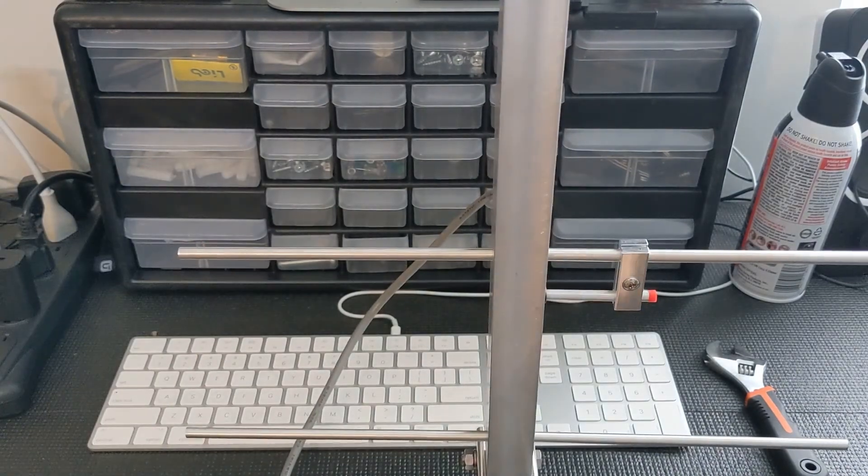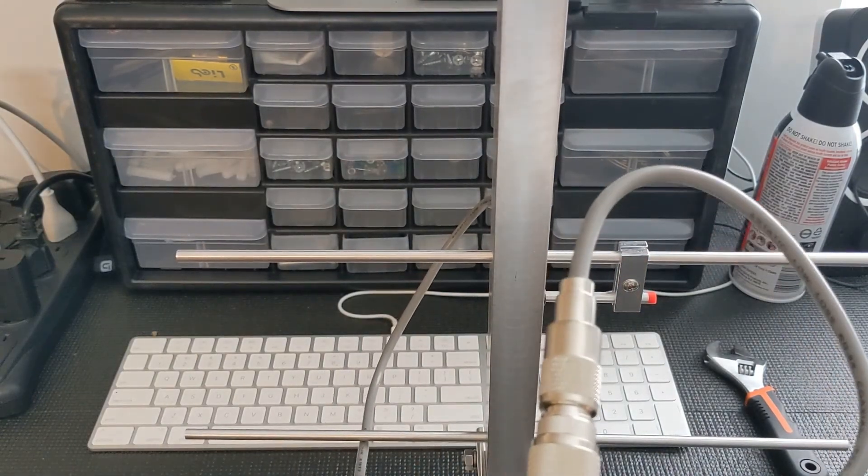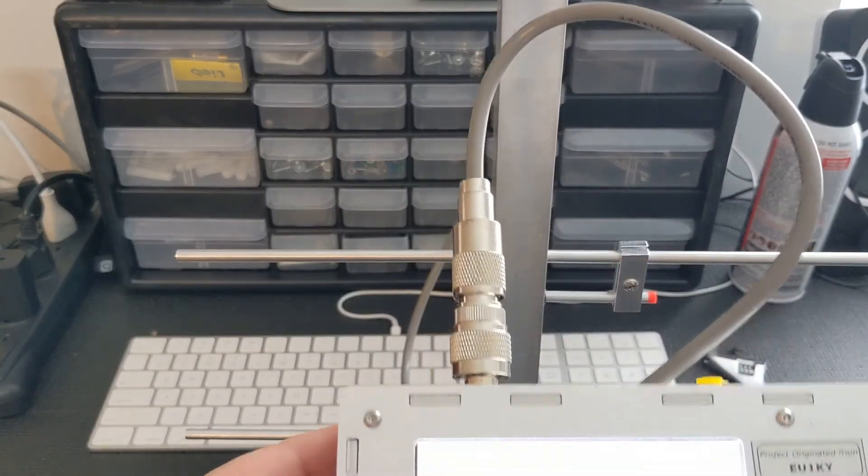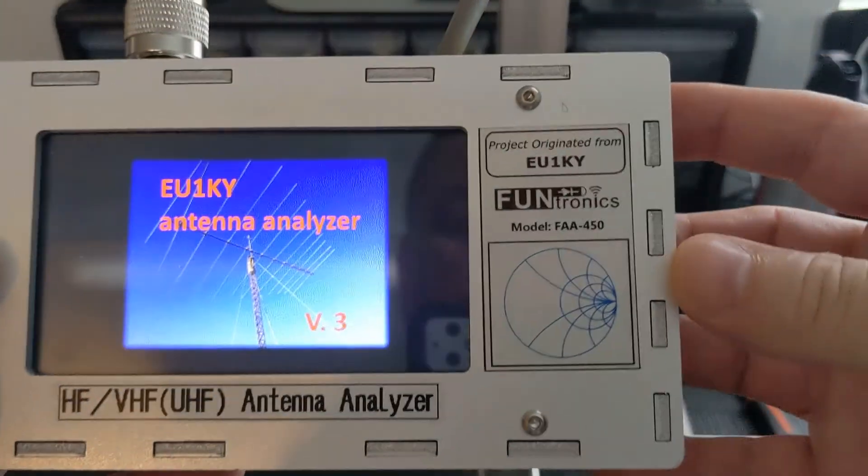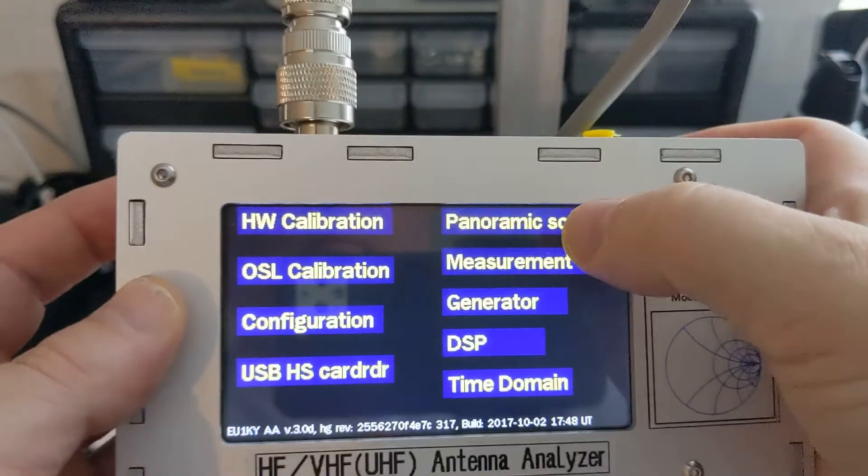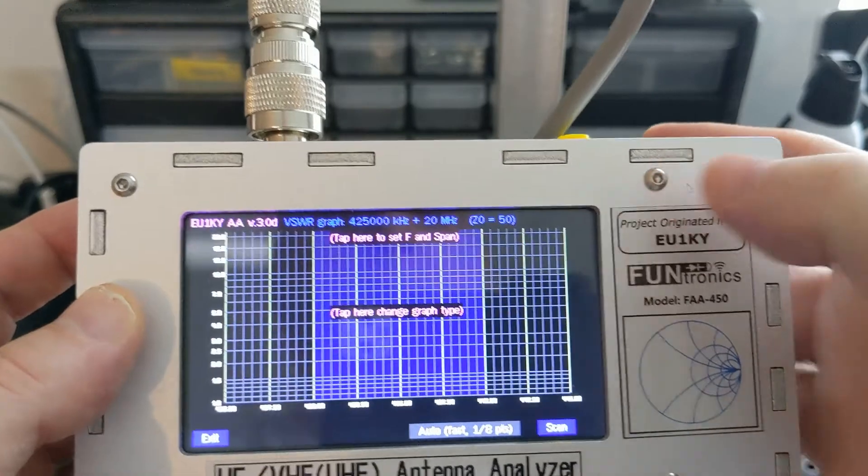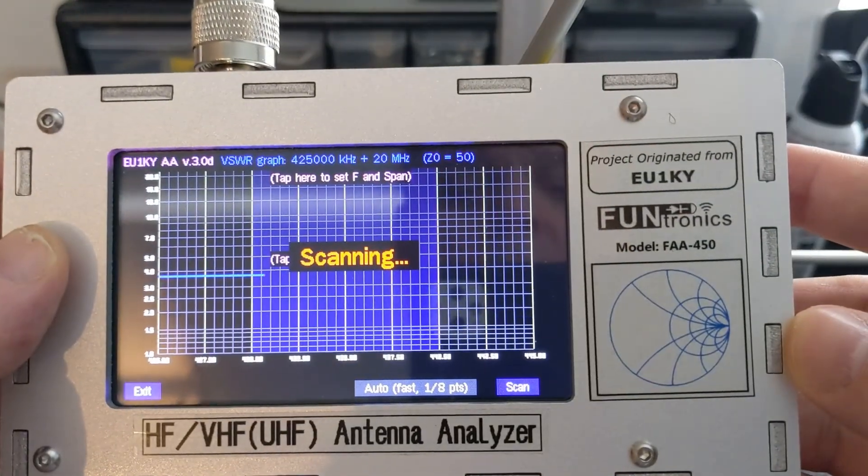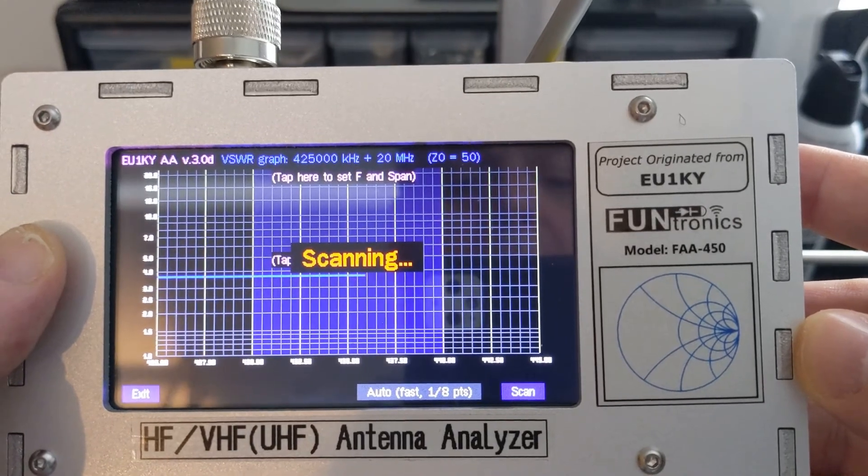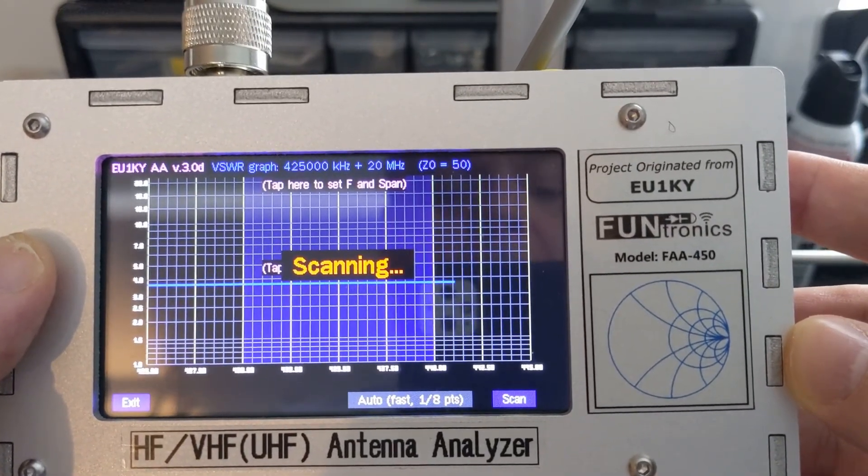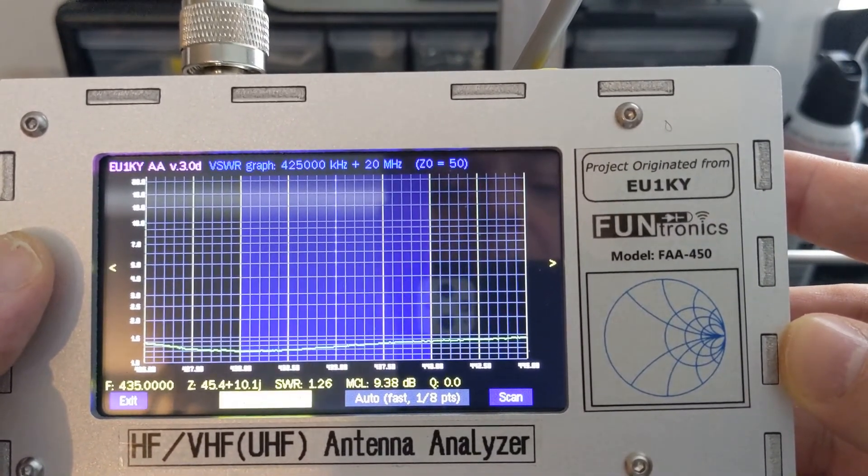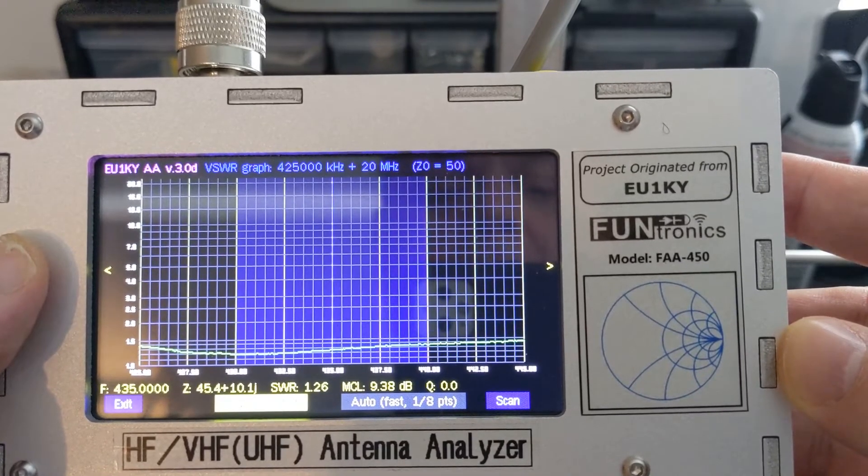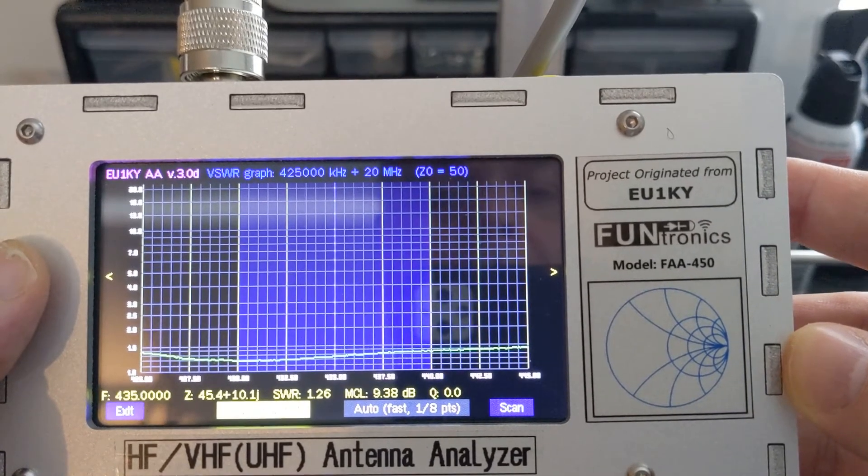Do another scan and see where we're at with the SWR. Once again, panoramic scan, frequency is already set, so we'll just start the scan. And guess what, after tightening down the electrical connection, we even get better results than we did.